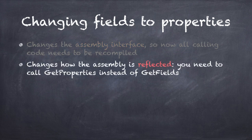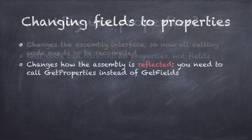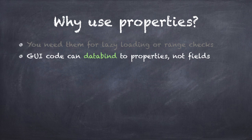Another problem is that you'll need new code to reflect your assembly. Fields are accessible through reflection by using the getFields method, but for properties you'll need the getProperties method. So any code that uses reflection — like serialization code — will need to be changed to take your refactoring into account.